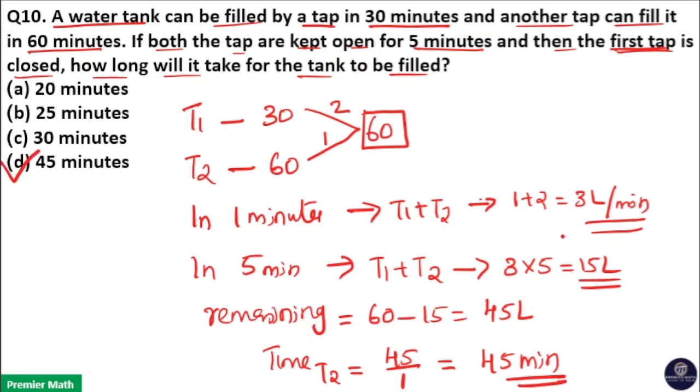Because in 5 minutes, 15 liters is filled by tap 1 and tap 2. So after that 5 minutes, tap 1 is closed. Then tap 2 is working. Tap 2 can fill 1 liter in 1 minute. That means 45 liters is filled in 45 minutes. So option D is your answer.